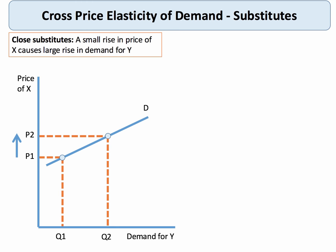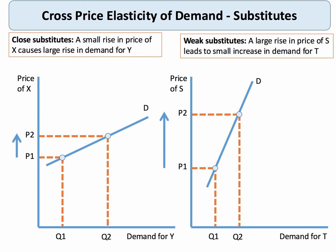How do we show cross price elasticity in a diagram? For substitute products, notice the labeling: price of X on the y-axis, demand for Y on the x-axis. A small increase in the price of X leading to a significant increase in demand for Y suggests close substitutes. In contrast, a large increase in the price of good S from P1 to P2 causing only a small increase in demand for substitute good T would illustrate two weak substitute products.